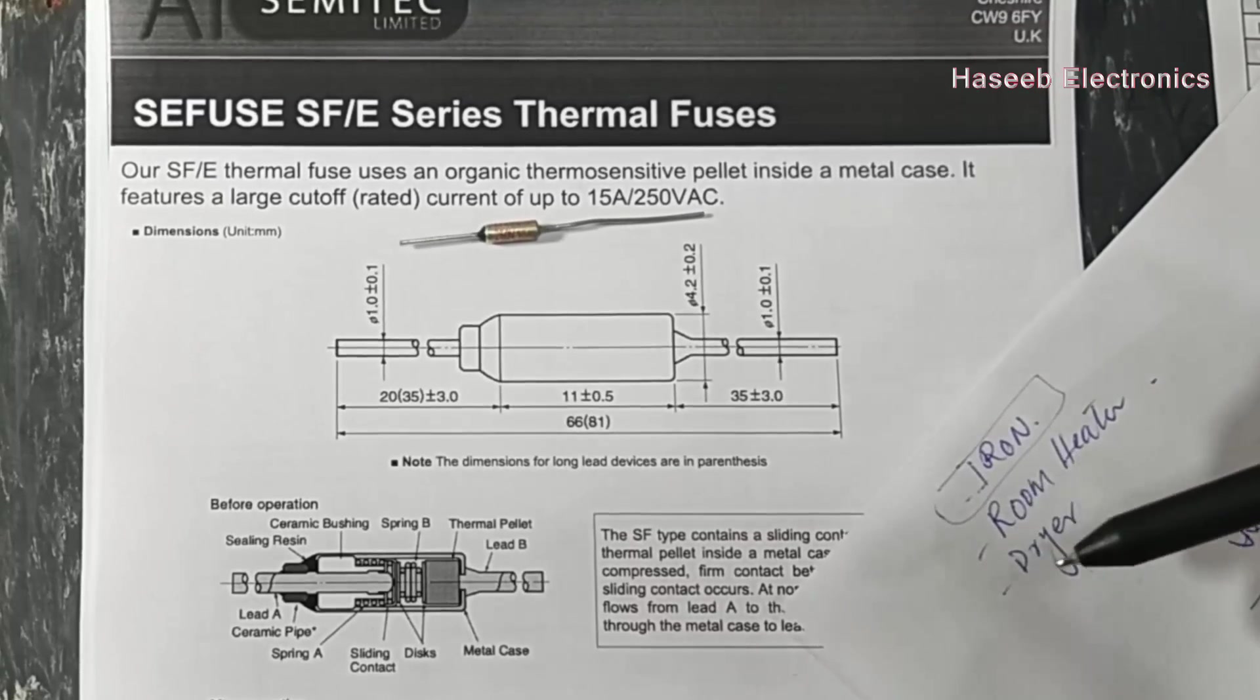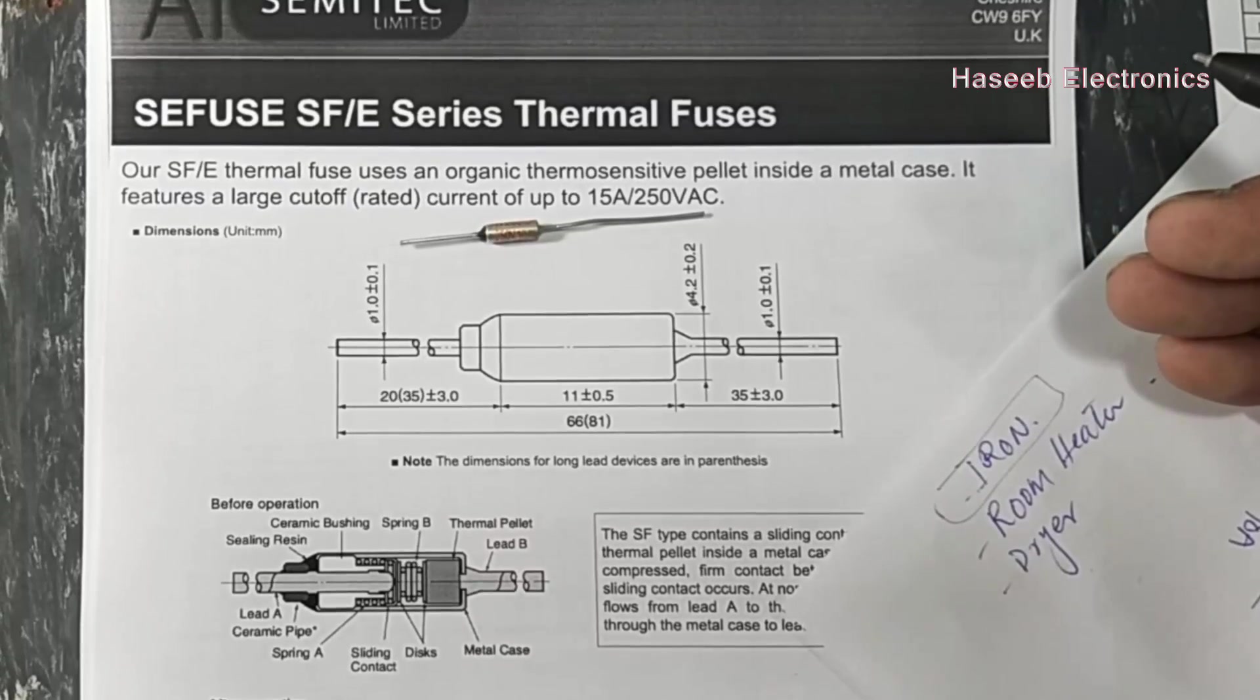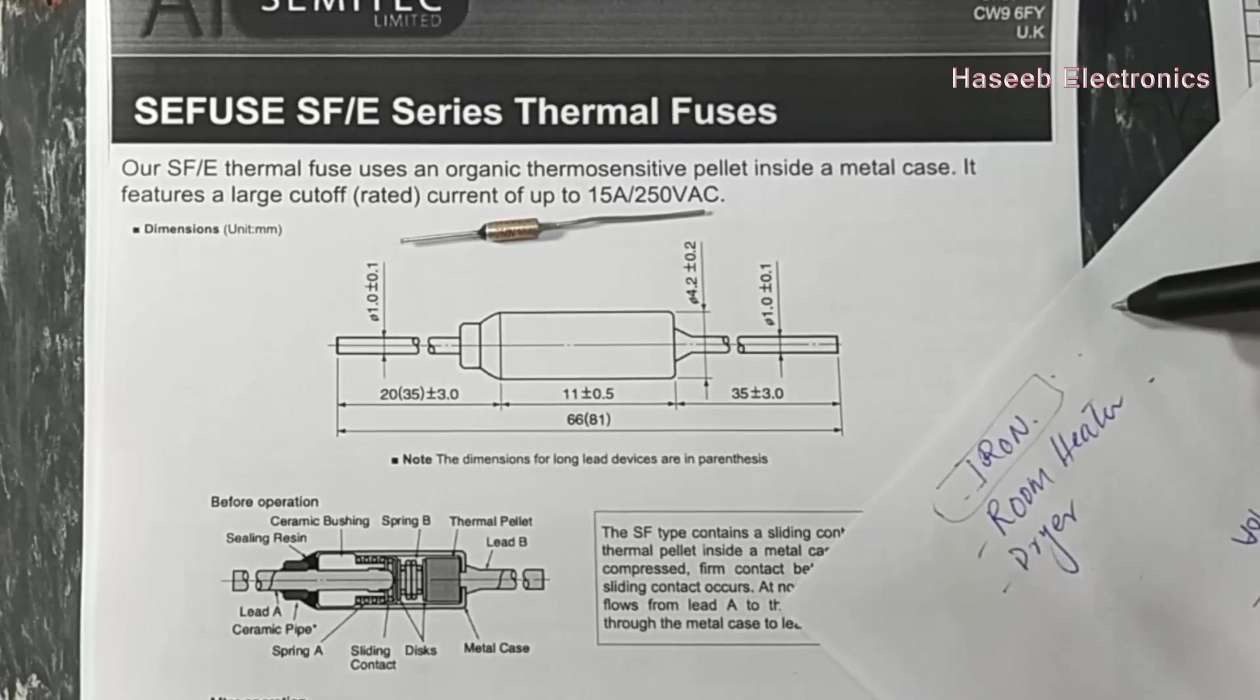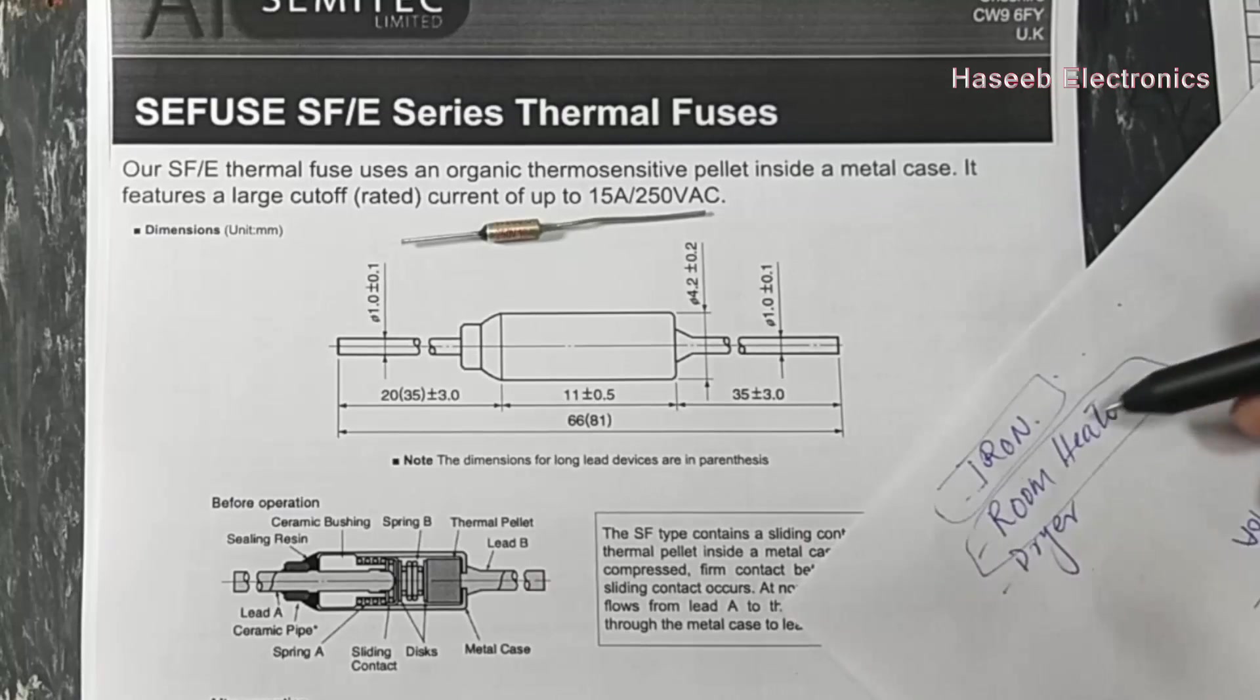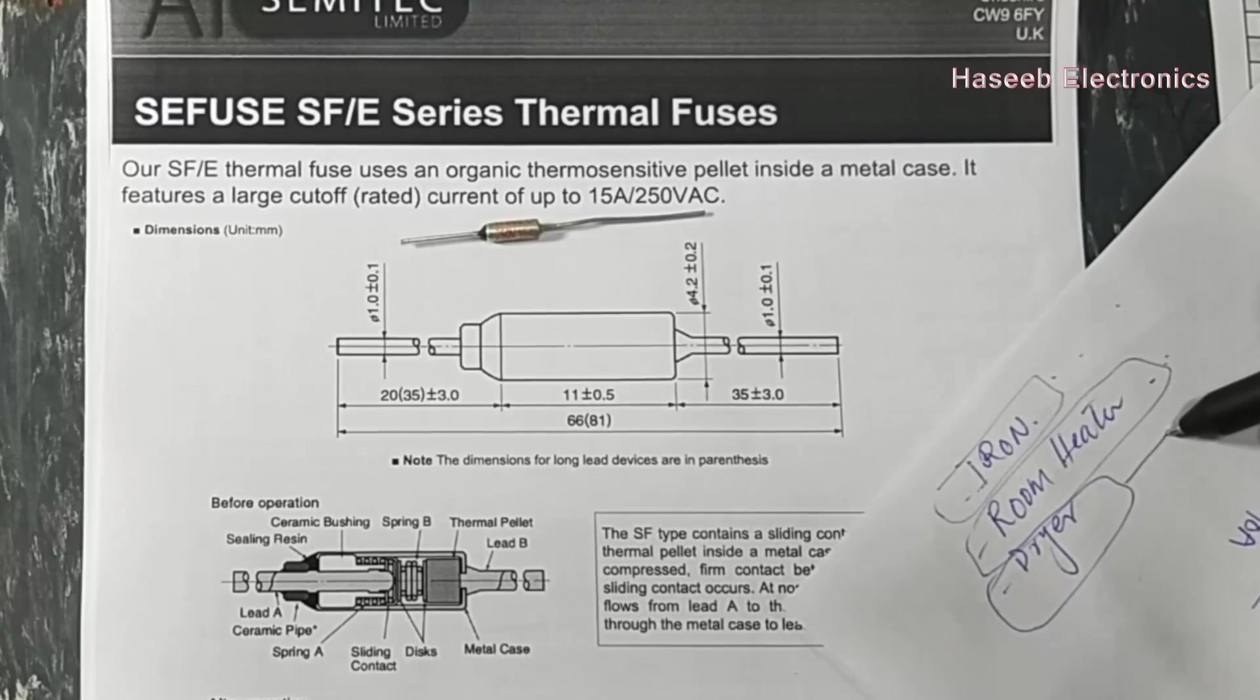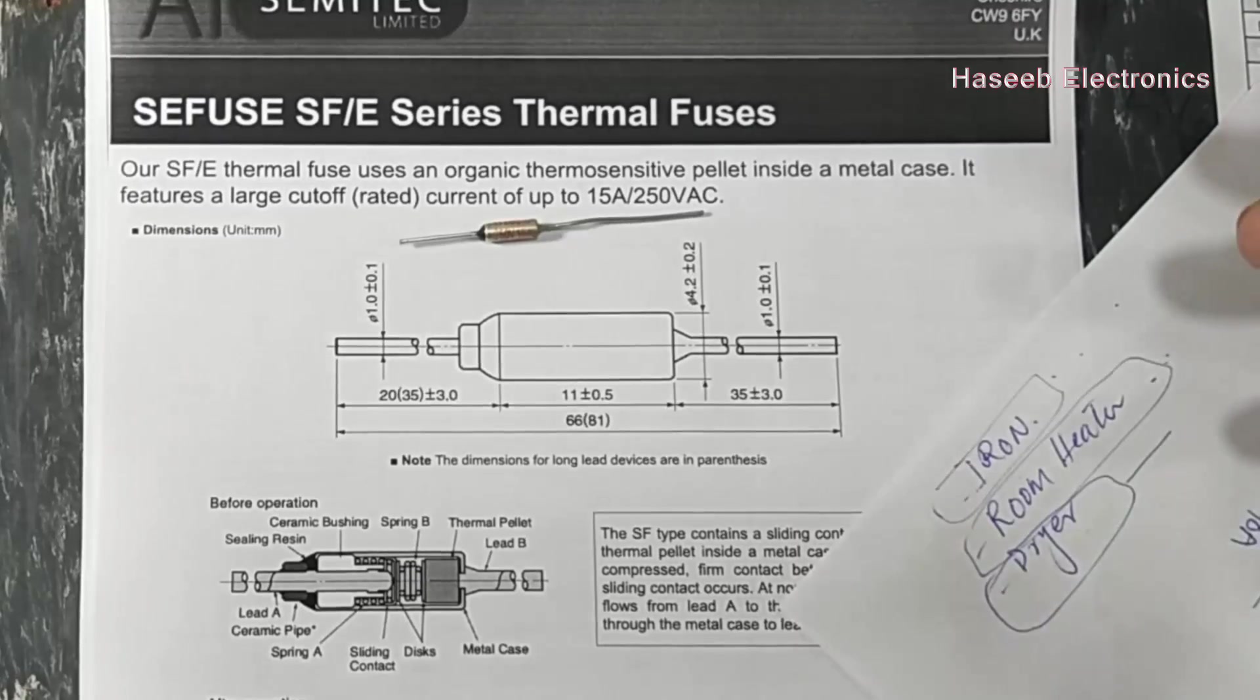We know if the heat is uncontrolled, the heater will keep heating up, and at a specific limit it may destroy or damage. If we discuss iron, iron has a plastic body. If we see room heaters, most room heaters are in plastic body. Hair dryers also have plastic bodies.